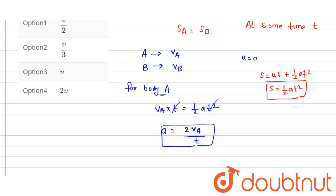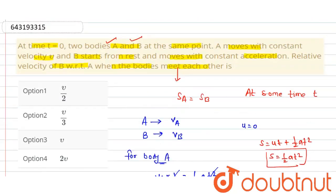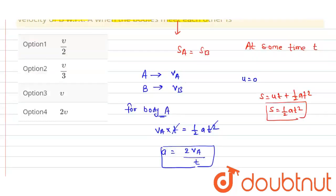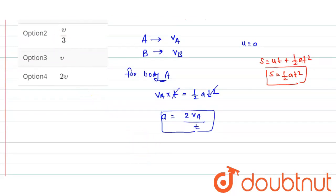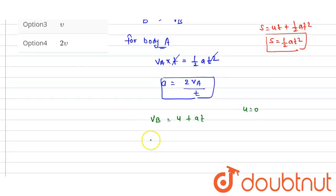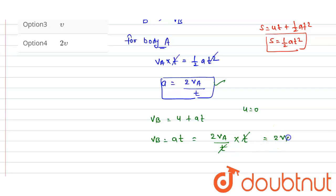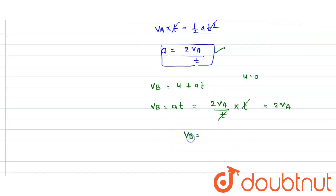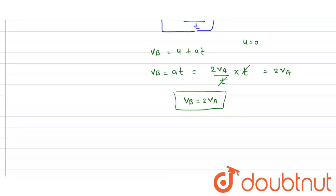Now we have to find the relative speed of B with respect to A. For body B, Vb equals U plus At, and since U equals 0, Vb equals At. Substituting A equals 2Va over t, we get Vb equals 2Va.